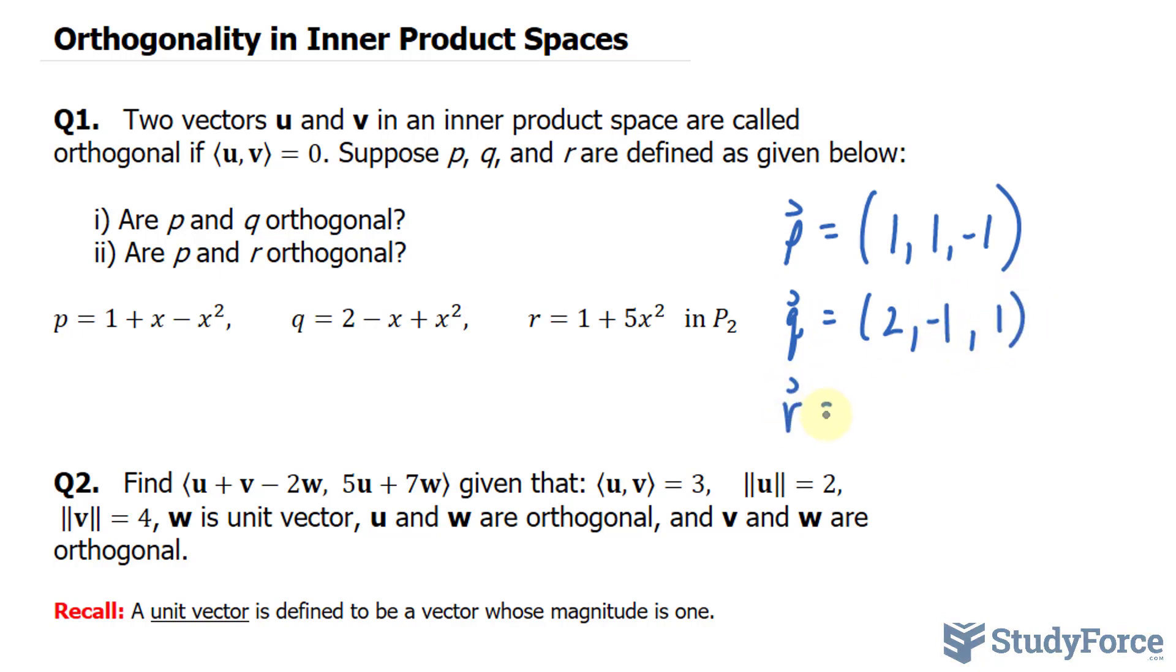And r will have the components, this constant is the first, and we're missing the x term. So it's 1, 0, and 5.